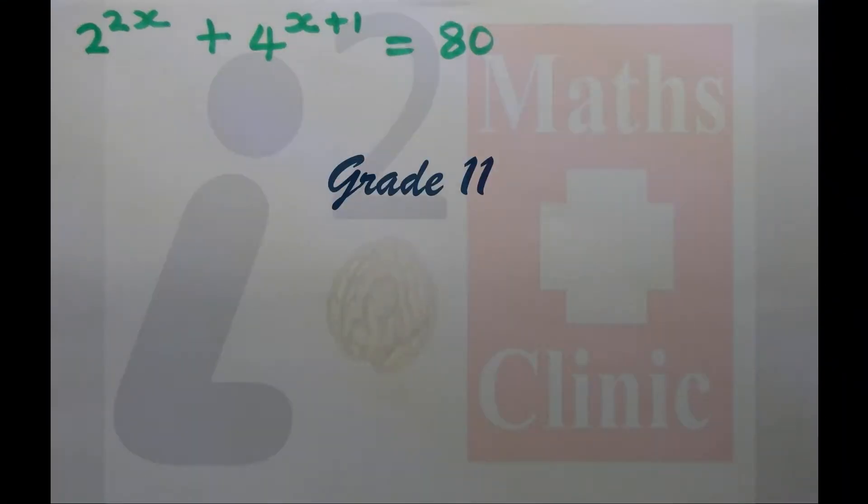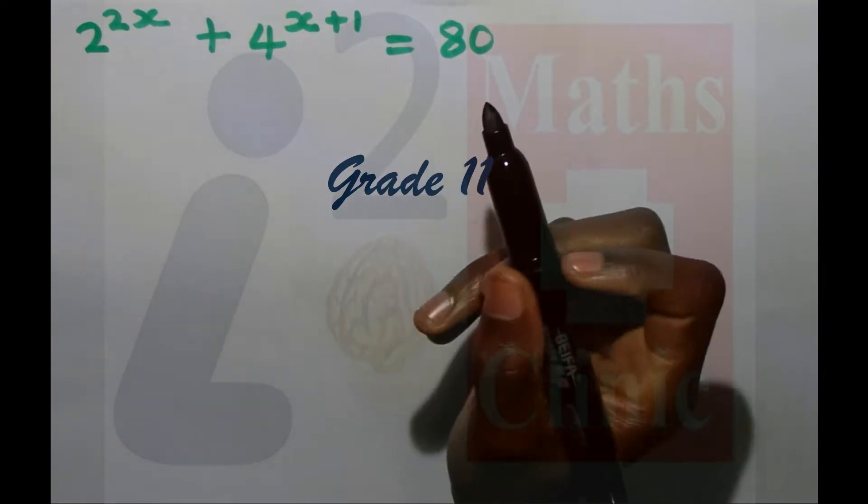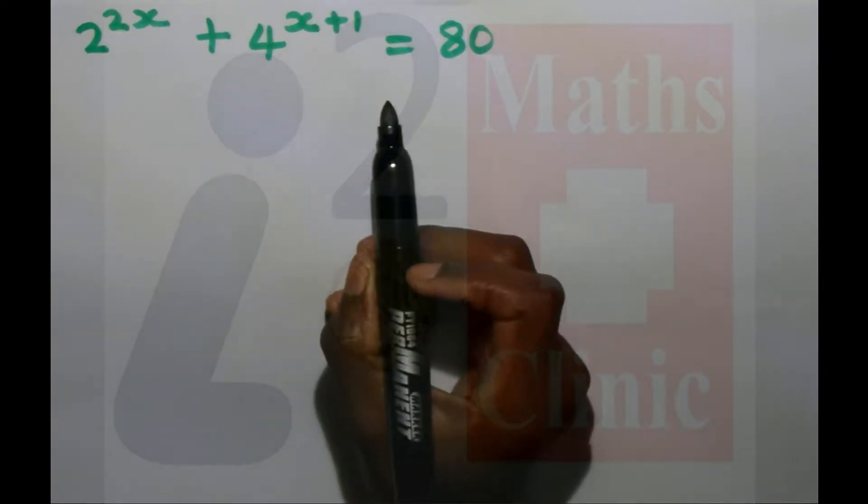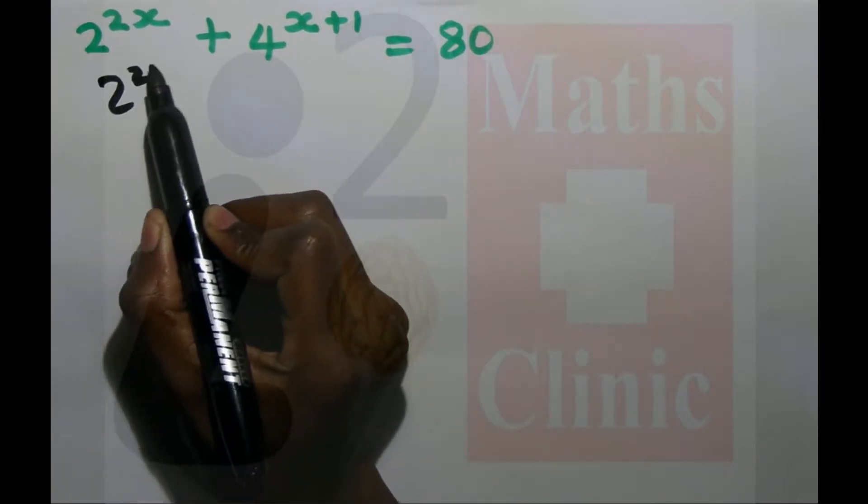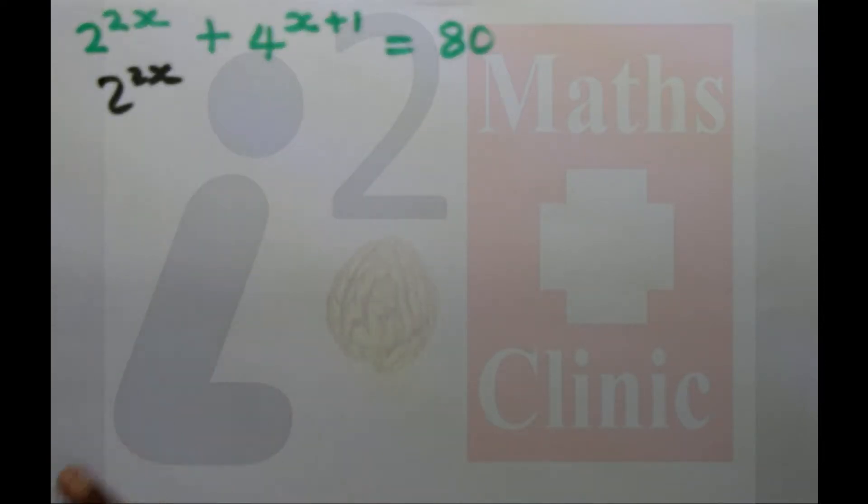How to solve this exponential equation. Now I want to use 2 to the 2x. I want to solve the exponential equation using 2 to the 2x.